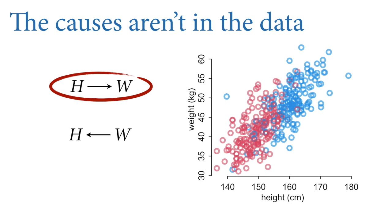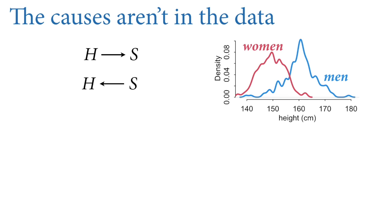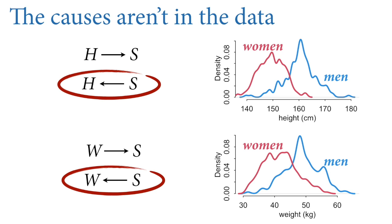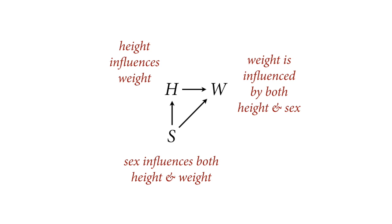If people grow taller, they must get heavier because there's more person — the geometry of the human body requires it. People can exercise and lose weight but they don't get shorter. Likewise, for biological sex, the arrow goes from sex to height, not the other way around — height doesn't influence sex in humans. So we consider arrows going from sex to height and from sex to weight. This gives us a triangle — a mediation graph — one of the most common structures in causal modeling.